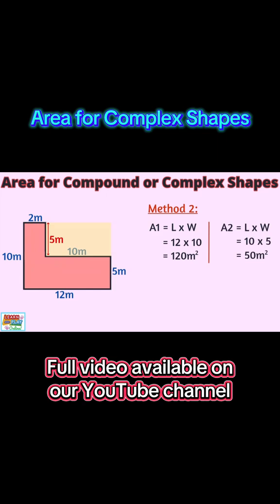We've now reached the last step for this method. To find the total area of the original complex shape, we need to deduct A2 from A1. 120 square meters minus 50 square meters is 70 square meters.